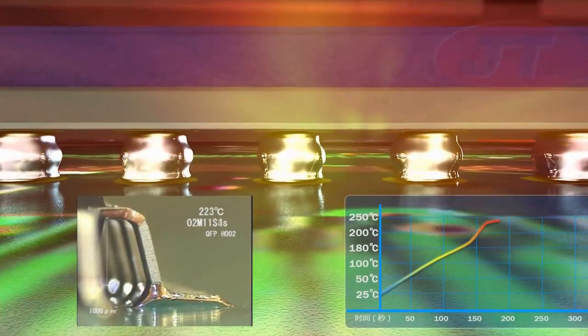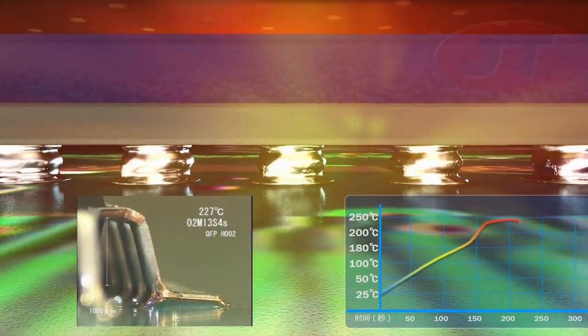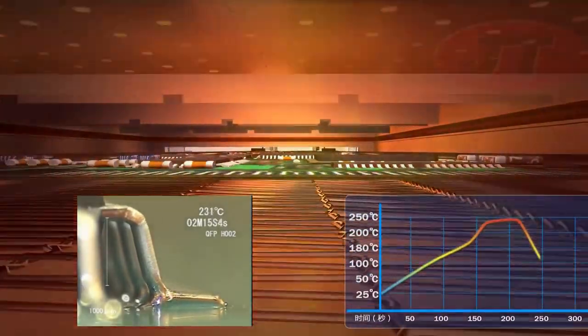When soldering complex PCBs with microchips, large ICs, and even BGAs all located on the same assembly, it's particularly important to achieve the lowest delta temperature.